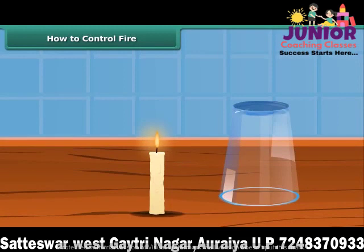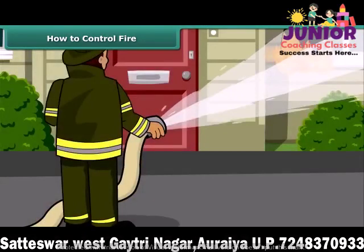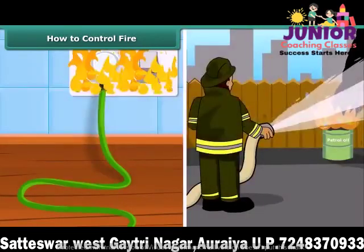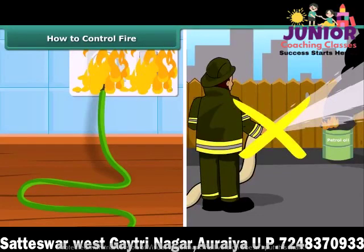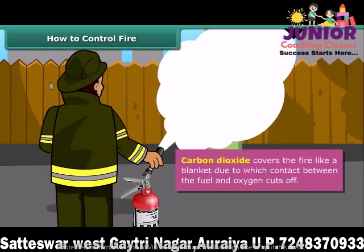Now we will see how fire can be put out. Fire needs oxygen, heat, and fuel to exist. However, it can be extinguished by removing any one of them. You must have seen firemen throwing water on fire — water brings the temperature of the combustible material below its ignition temperature and cuts off the supply of air. But water is not a good extinguisher for electrical or oil fires. For electrical and oil fires, it is best to use carbon dioxide as an extinguisher. Carbon dioxide, being heavier than oxygen, covers the fire like a blanket, cutting off contact between the fuel and oxygen.